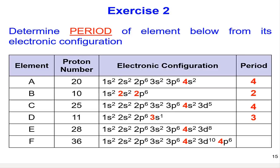For E, the highest N value in the electronic configuration is 4. Same as F, the highest electronic configuration of F is also 4. Therefore, both E and F are in period 4.